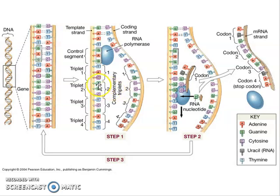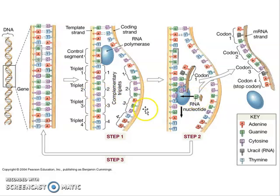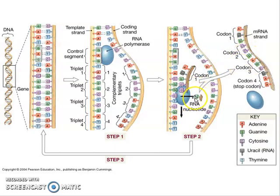From that point on, the codons can vary quite a bit because there are so many different proteins that can be made. The next amino acid varies according to the gene and which protein is being made. In this case, the next triplet is guanine, and what is complementary to guanine is cytosine. So the codon being built is cytosine, cytosine. Then what's complementary to cytosine is guanine, so guanine is attracted — completing that next codon.